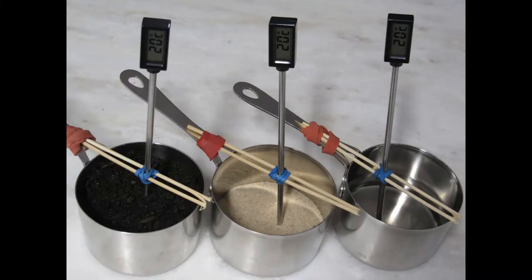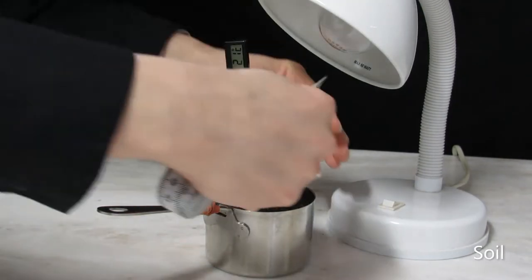When all materials are weighed out, suspend the tip of the thermometer in each material, using the bamboo skewer and rubber bands to hold your thermometers steady.